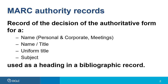A name heading may be a personal name, corporate name, a meeting, or a geographic name. A name title heading consists of both a name and a title of a work. A uniform title heading consists of a title not associated with a particular author.